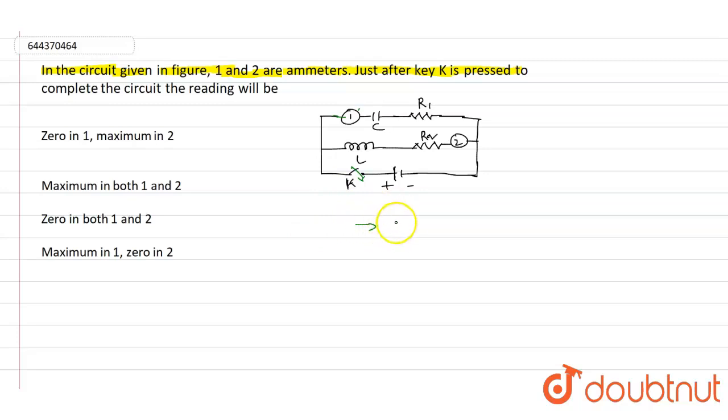So when the capacitor provides no resistance, there will be maximum current flowing through the ammeter number 1. And moreover, initially the inductor provides infinite resistance to current and hence zero current flows.